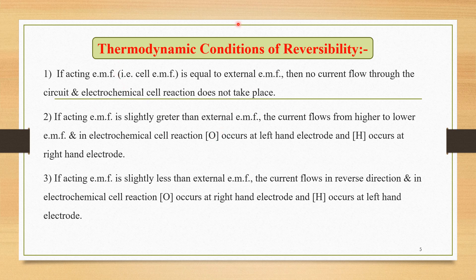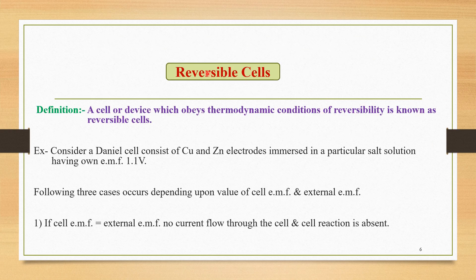Now, we are going to know what is meant by reversible cells. A cell or device which obeys thermodynamic conditions of reversibility is known as a reversible cell. Those conditions which we just studied — if those conditions are obeyed by a cell, then it is called a reversible cell.